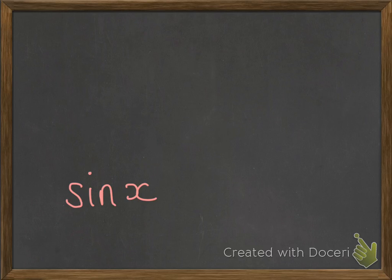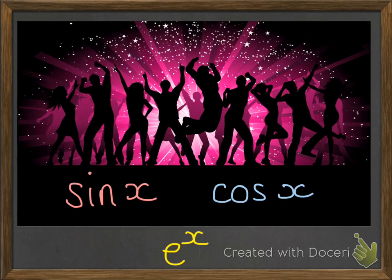Which brings us to our joke. Sine x, cos x, and e to the x all went to a party. Sine x and cos x were having a great time, getting mixed together and having lots of fun, and they noticed e to the x was sitting by himself in the corner. They went over and tried to persuade him to join in, and he was looking pretty lonely. He just replied: 'You know, I keep trying, but every time I try to integrate, I just end up with myself.'